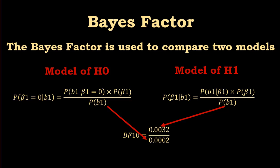These are not the actual numbers — I'm just using numbers for illustration. Let's say the probability of observing the data under the model of the alternative hypothesis is 0.0032, and the probability of observing the data under the model of the null hypothesis is 0.0002. We calculate this ratio, and that is 16. That's our Bayes factor, and that's the end of the process.